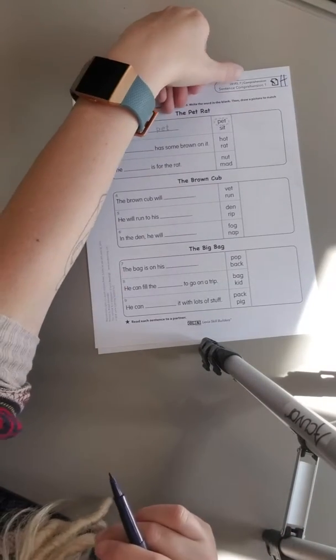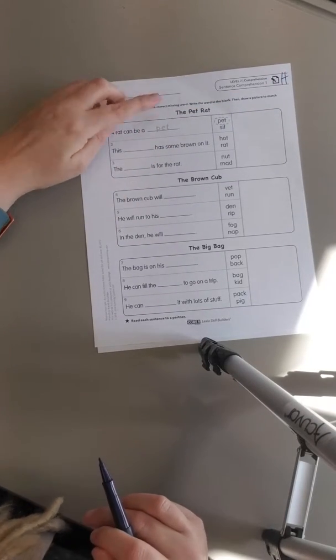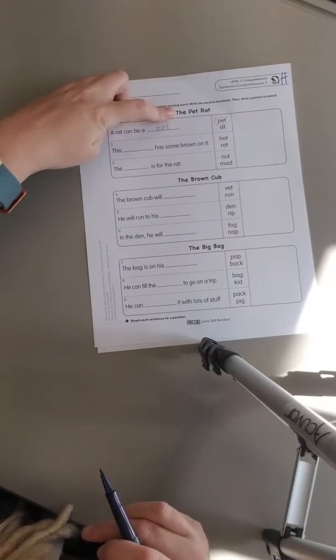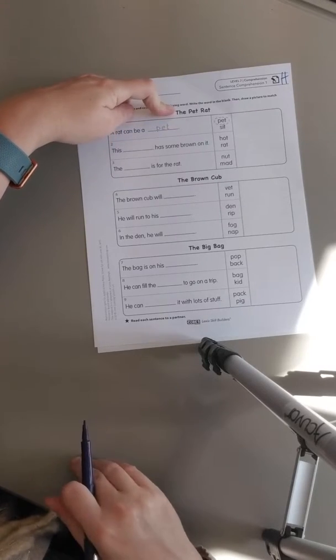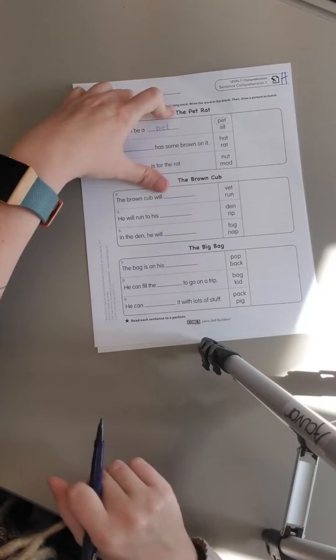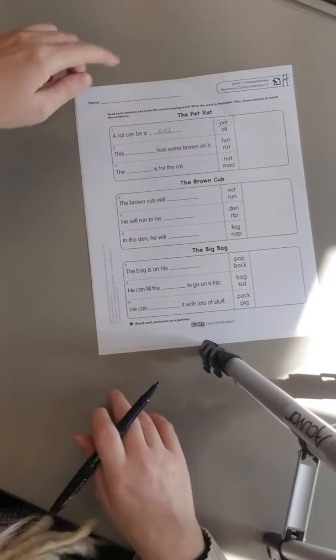Okay, this is level 7, comprehension sentence comprehension 1, sheet H. This one says the pet rat at the top, so make sure you're on the right page. If you don't have this one out, then you need to put the other one away and get this one out because this is sheet H and you need to make sure you're on the right page. So once you get it out, write H at the top.